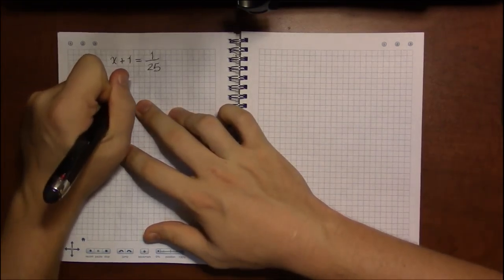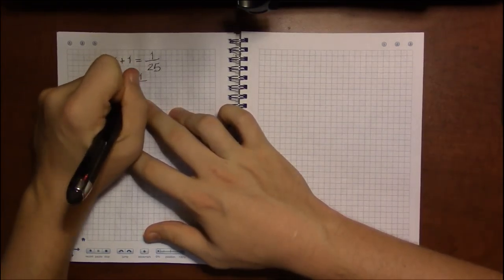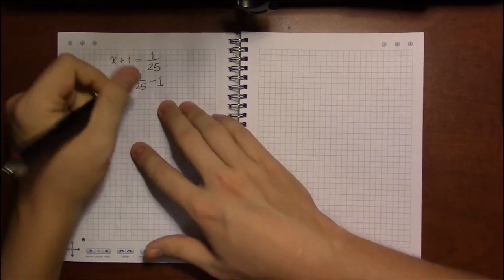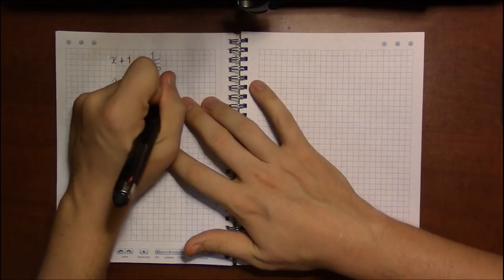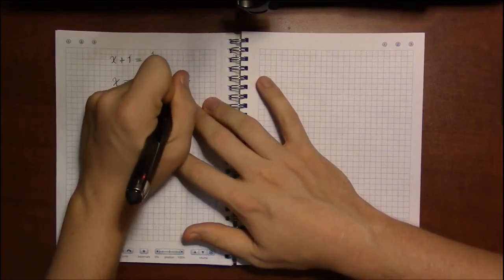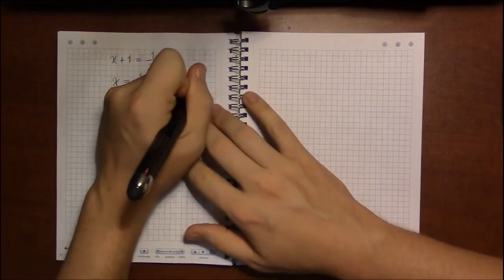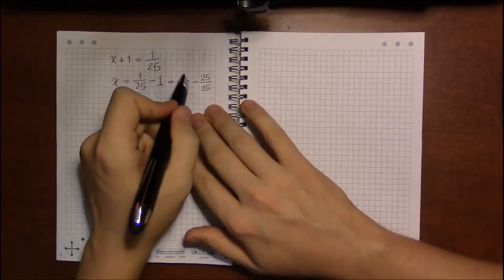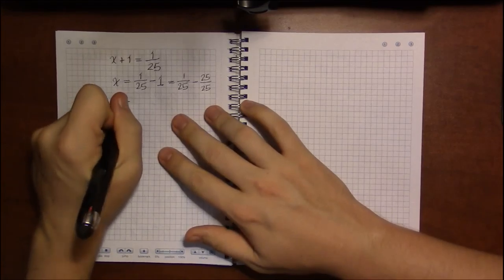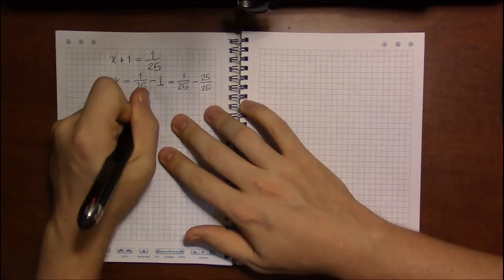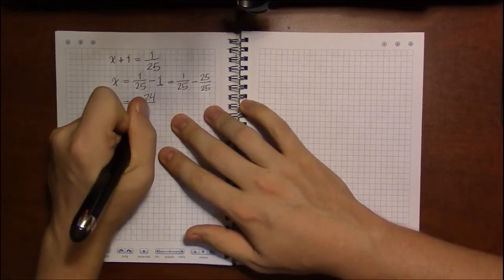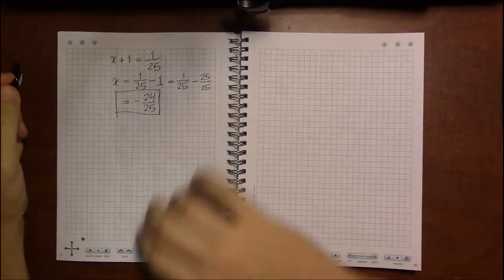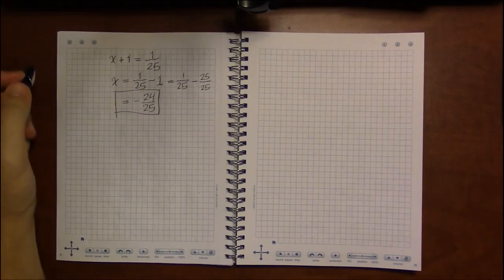And now if I subtract 1 from both sides, I'm going to have to have a common denominator in order to combine these two. So this is going to have to be 25 over 25. And 1 minus 25 is minus 24. So our answer is minus 24 over 25.